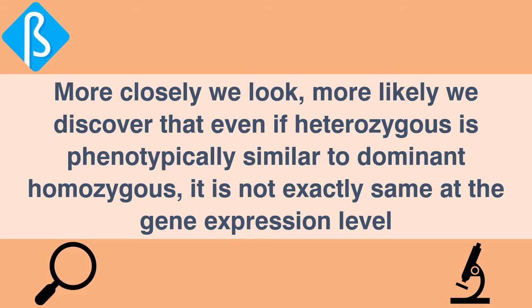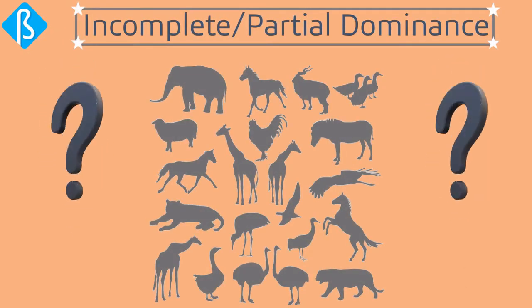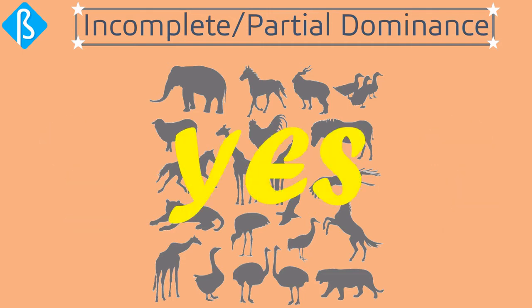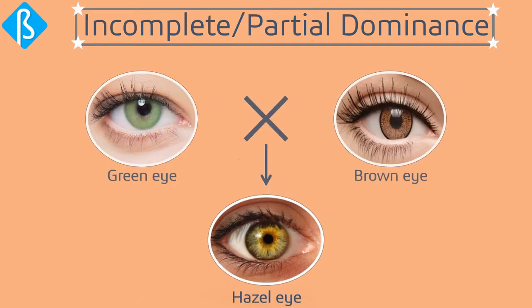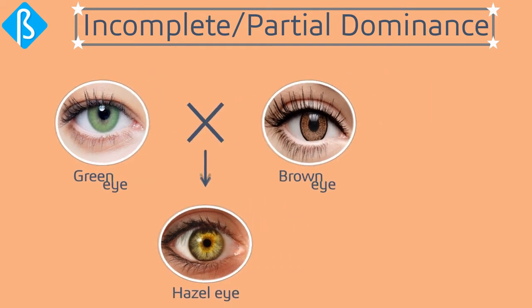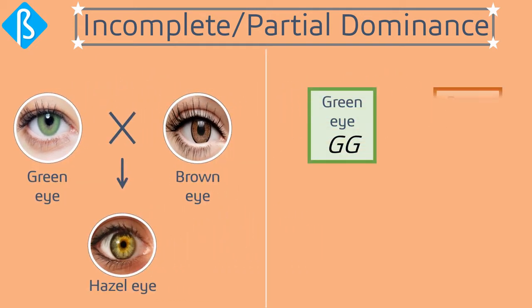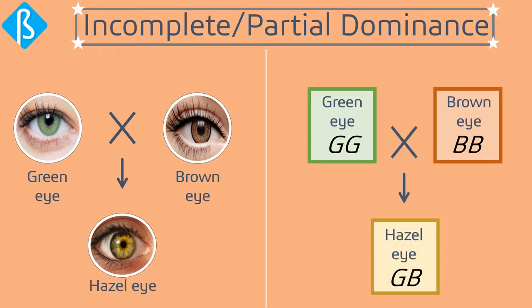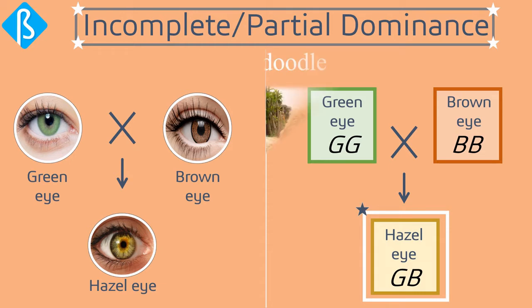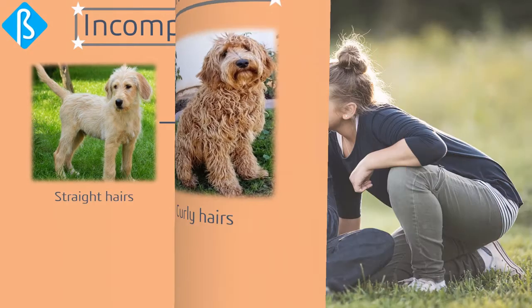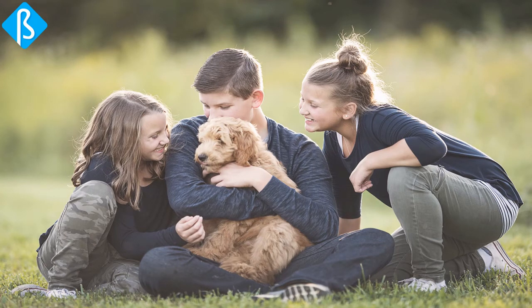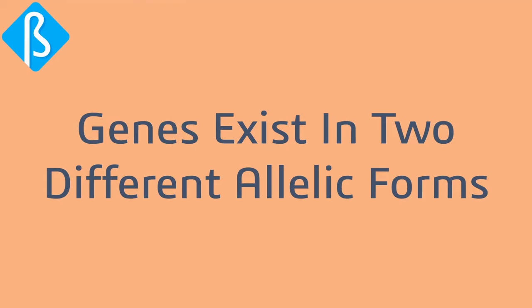Even if heterozygous is phenotypically similar to dominant homozygous, it is not exactly the same at the gene expression level. This phenomenon also occurs in animals and humans. Hazel eye color — a mixture of green and brown — is due to incomplete dominance. If G is the allele for green eye color and B is for brown eye color, their progeny carries both alleles in an incompletely dominant relationship, resulting in hazel eyes. Wavy hair in Labradoodle dogs is another example, coming from straight-haired and curly-haired parents.